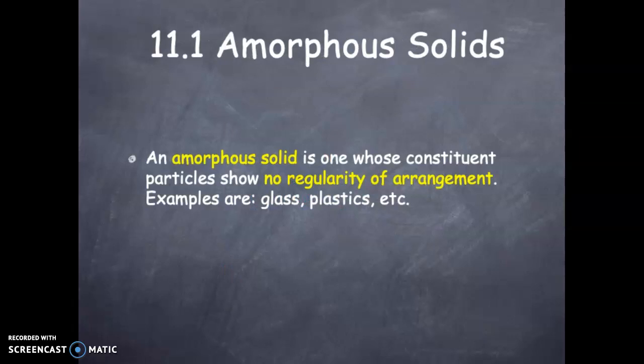Amorphous solid: An amorphous solid is one whose constituent particles show no regularity of arrangement. Examples are glass, plastics, wood even. These are amorphous.